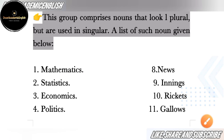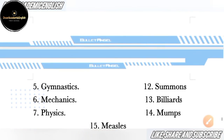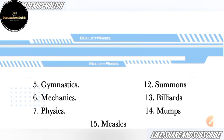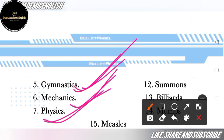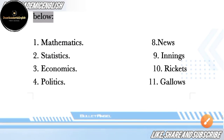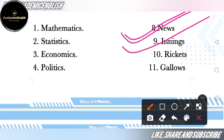Next is 'gymnastics' — gymnastics is also used as singular. Next is 'mechanics' — mechanics is also singular. Next is 'physics' — physics is also used as singular. The eighth word is 'news' — news is also used as singular. Next is 'innings' — innings is also used as singular.